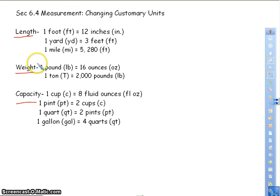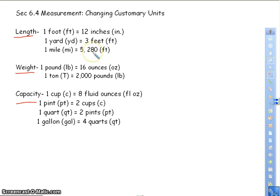Now, things you need to pay attention to: one foot equals 12 inches, so feet are larger than inches. One yard equals three feet, so yards are larger than feet. One mile equals 5,280 feet, so miles are larger than feet and also larger than yards. Sixteen ounces equals one pound, so one pound is larger than an ounce. Two thousand pounds equals one ton, so one ton is larger than a pound.